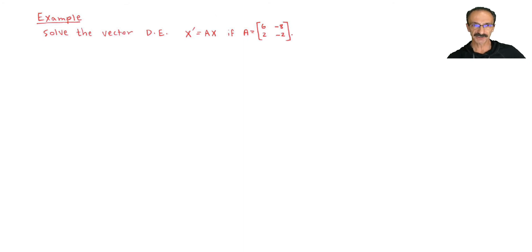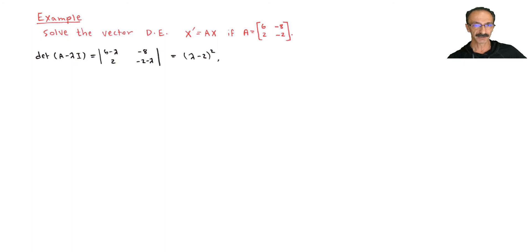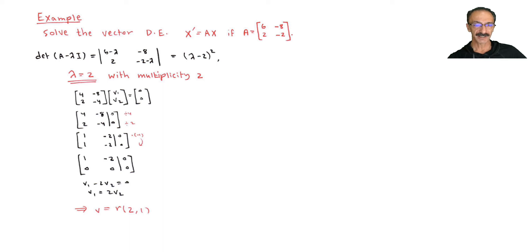Now a second example: solve the vector differential equation x' = Ax, where A = [[6, -2], [-2, something]]. We find lambdas and vectors — if it's non-defective we follow regular steps, if defective we play the same game as today. Here lambda equals 2, repeated twice. Solving for the eigenvector, I get v = [2, 1].